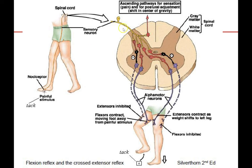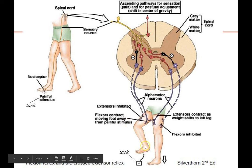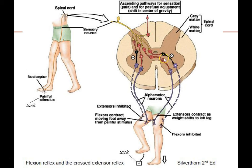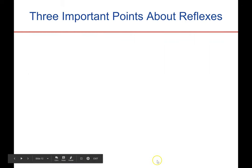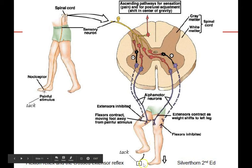When you step on a tack, the action potential comes in, you end up inhibiting one muscle and contracting another. This flexes your leg and moves the foot away from the painful stimulus. These signals also cross over the midline to the other side of the spinal cord where they do the opposite — inhibiting the flexor muscle and exciting the extensor muscle — so the left leg is extended pressing into the ground while the right leg is contracting and pulling it away.